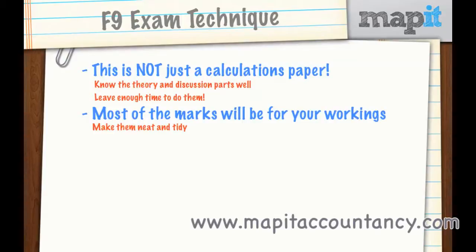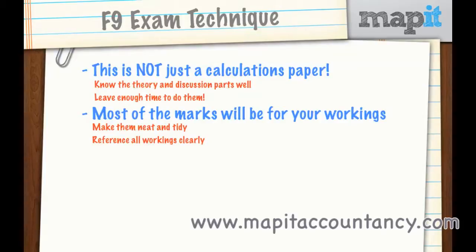If that means slowing down and writing a little bit slower, that's fine — do it. You can manage your time, keep your writing neat, and still pass this exam. Also, reference all of your workings clearly. If you do get a chance to bring the answers into a final answer, make sure you reference it to show where that final answer came from, because if it's incorrect the examiner will have to go back and mark the workings. Make those workings neat and tidy, reference them so the examiner can see where they're coming from, and make sure the examiner can pick up the marks from them.